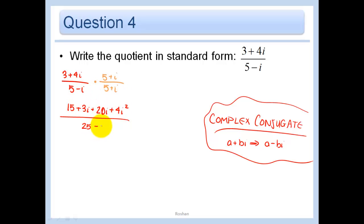So now let's combine like terms. So we get that 15 plus 23i. And then this is 4 times negative 1, which is minus 4. Over 25 minus, and that's just negative 1. And so we're left with 15 minus 4 is 11 plus 23i over 26.